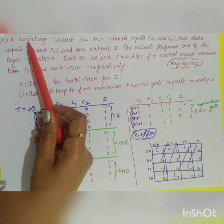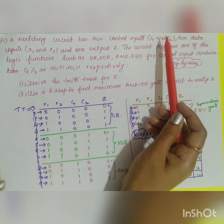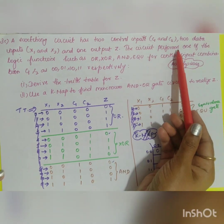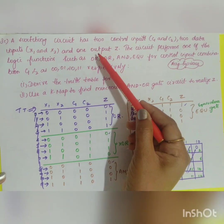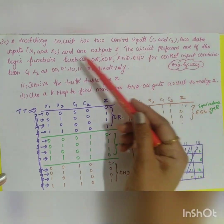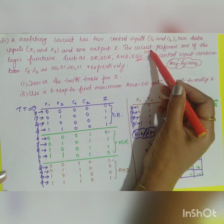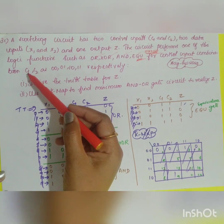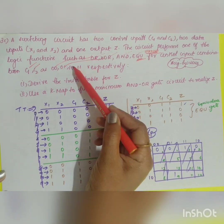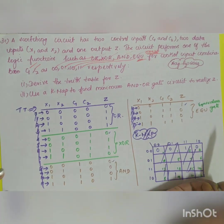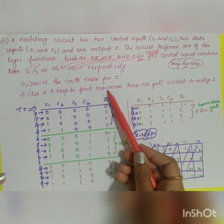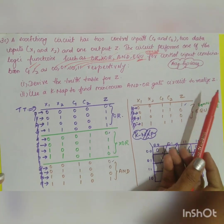The third question, part A: a switching circuit has two control inputs c1 and c2, two data inputs x1 and x2, and one output z. The circuit performs one of the logic functions — OR, XOR, AND, and equivalence (XNOR) — for control input combinations: c1c2 = 00 for OR, 01 for XOR, 10 for AND, and 11 for equivalence. Derive the truth table for z and use a K-map to find a minimum AND-OR gate circuit to realize z.